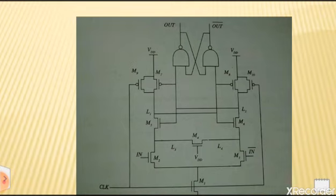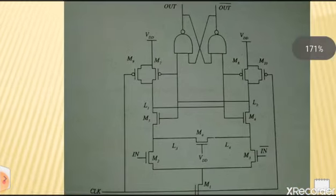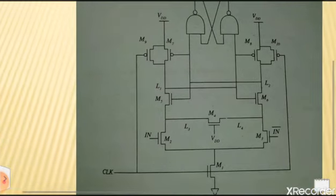M1 is similar to an evaluate switch in dynamic circuits and it is turned off ensuring that the differential inputs don't affect the output during the low phase of the clock. On the rising edge of the clock, the value is 1.